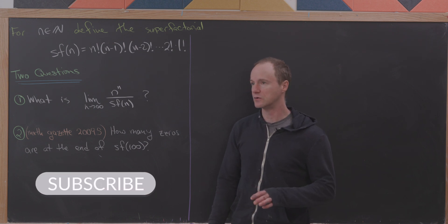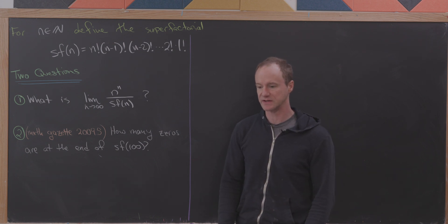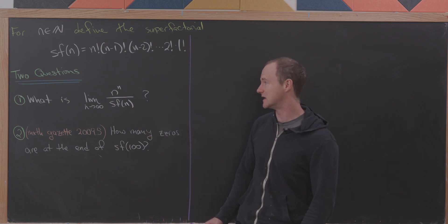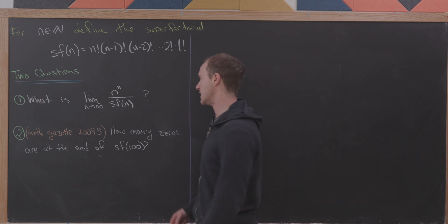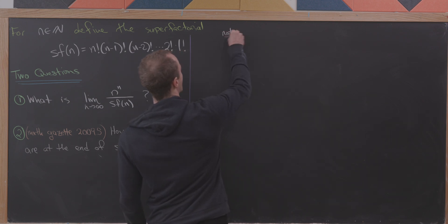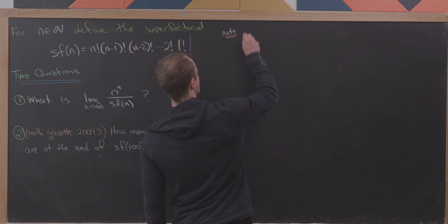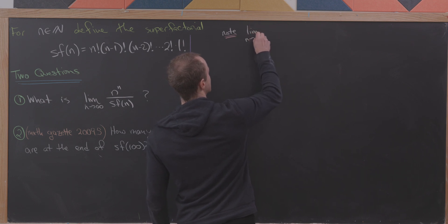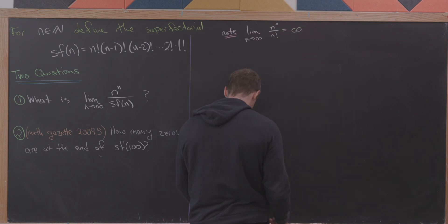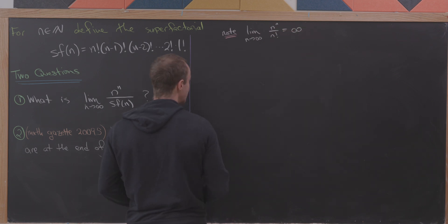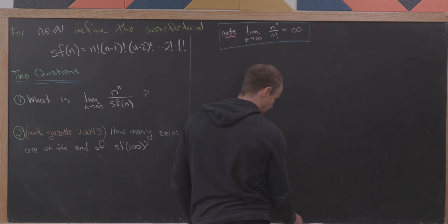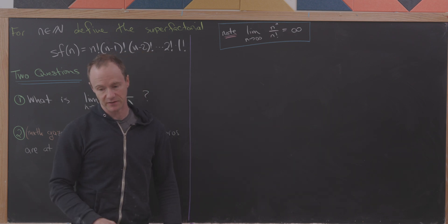The first thing we're going to do talks about how large the superfactorial is and its growth. We want to determine the limit as n goes to infinity of n^n over sf(n). Before doing this, I'd like to note the well-known limit that n^n over n factorial is infinite. So what we'd like to determine is whether the superfactorial grows more closely to the factorial or to n^n.